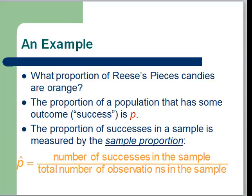The proportion of successes in a sample, on the other hand, is measured by something called a sample proportion. And the symbol for the sample proportion is P hat. The formula for the sample proportion is the number of successes in the sample divided by the total number of observations in the sample.